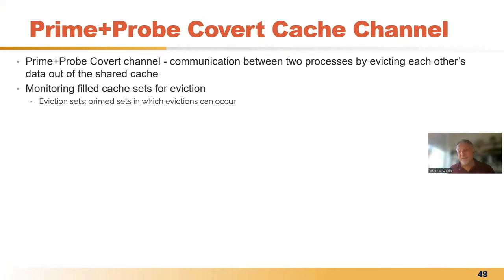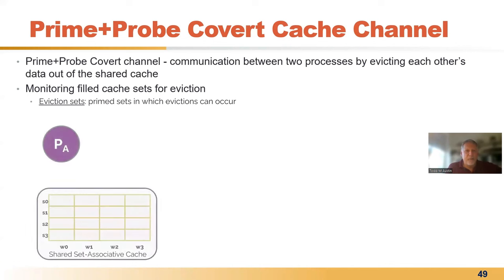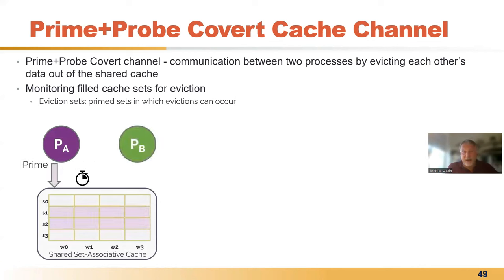The underlying microarchitecture has all those features we talked about earlier — it shares across security boundaries, optimizes the common case, and there's high-precision timing to take advantage of. So let's take a look at a classic microarchitectural cache-based side-channel attack called Prime+Probe. We're going to use this to infer from Process A what Process B is doing by how they interact in the cache.